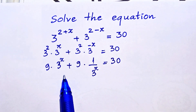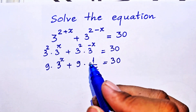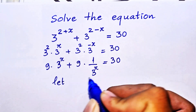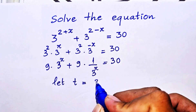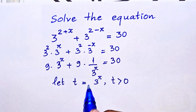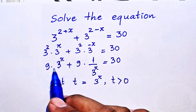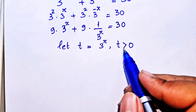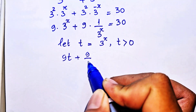Our equation has 3^x appearing repeatedly, so we introduce a new variable. We let t equal 3^x, where t must be positive because it is an exponential expression.